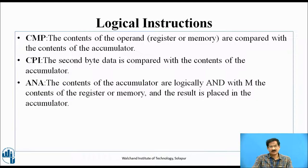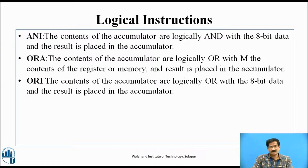CMP: The contents of the operand register or memory are compared with the contents of the accumulator. CPI: The second byte data is compared with the contents of the accumulator. ANA: The contents of the accumulator are logically ANDed with the contents of either a register or memory, and the result is placed in the accumulator. ANI: Similar to ANA, but the accumulator is ANDed with an immediate 8-bit data value; the result is placed in the accumulator.